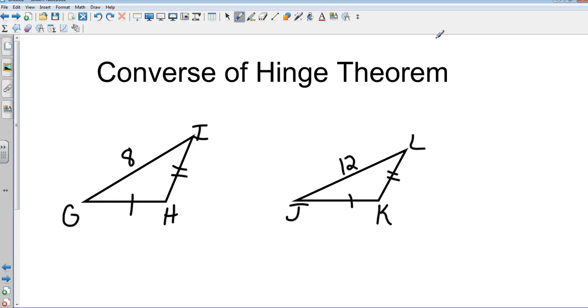Take a second and copy this down real quick, and then we'll talk about it. Again, go by what it actually looks like. Some of you are looking at GI and JL and saying there's no way that that's eight and that's twelve. Just look at the representation and let's discuss things we can prove.